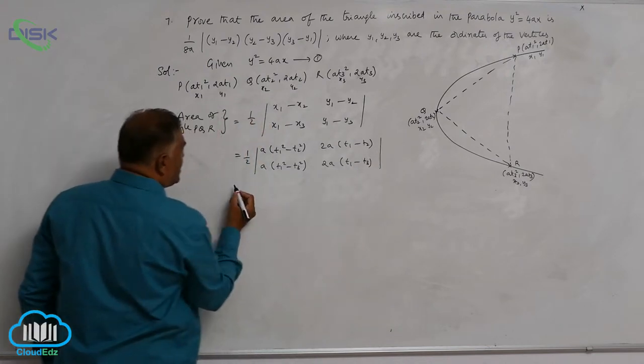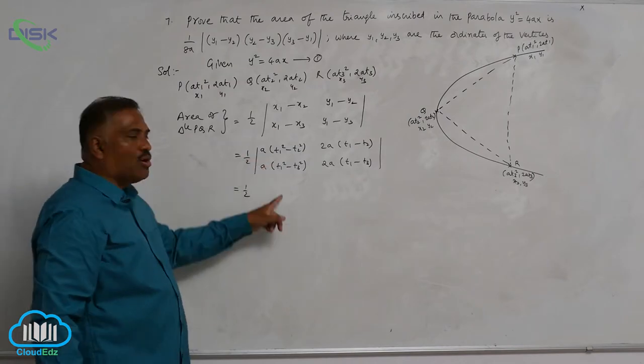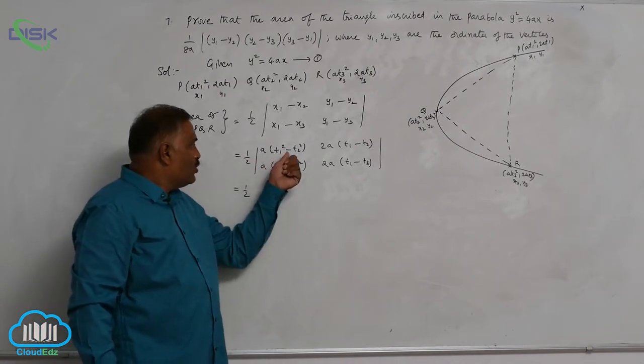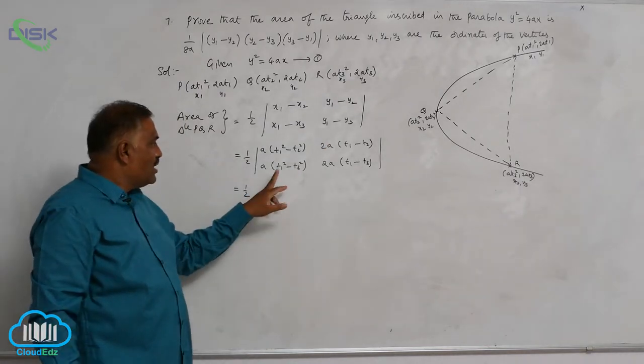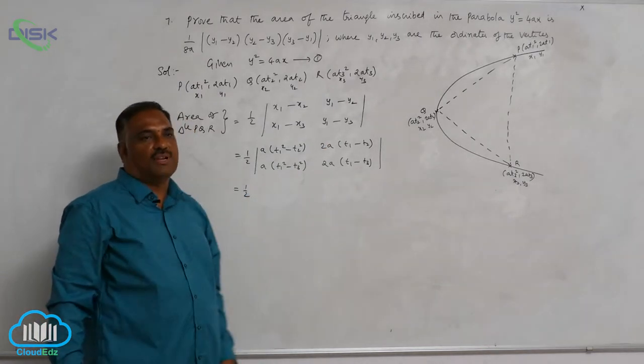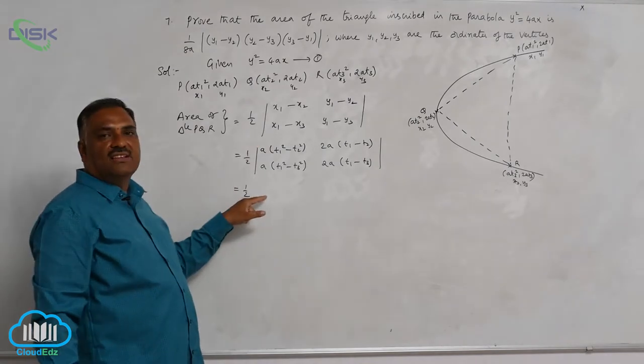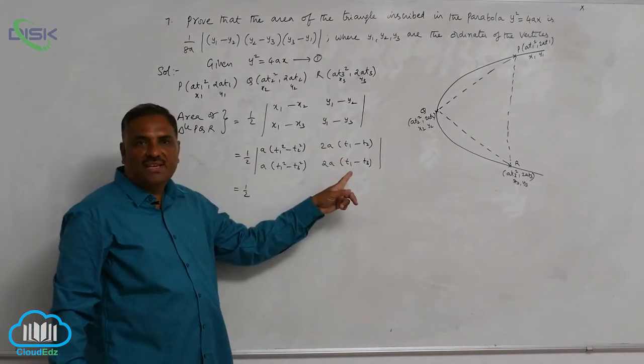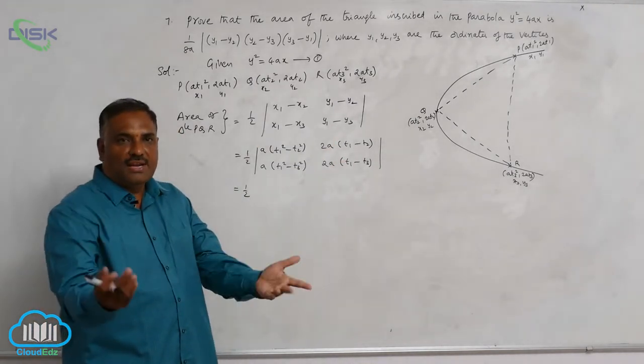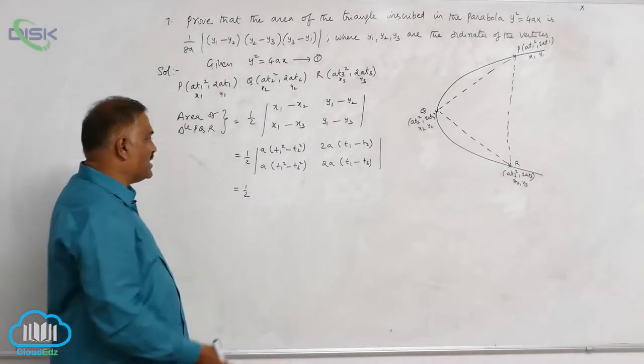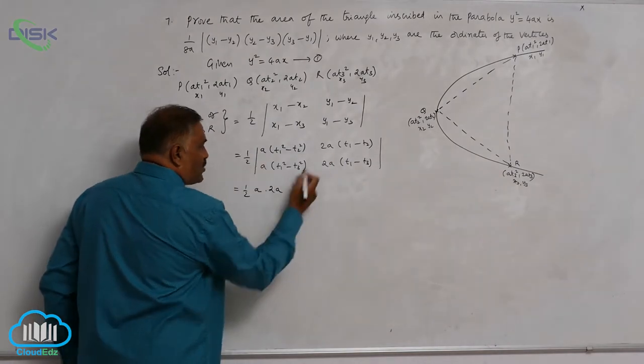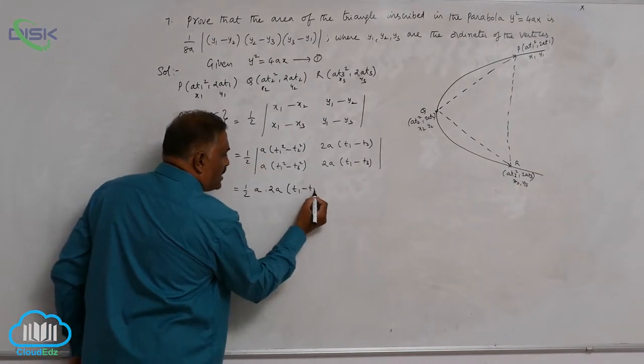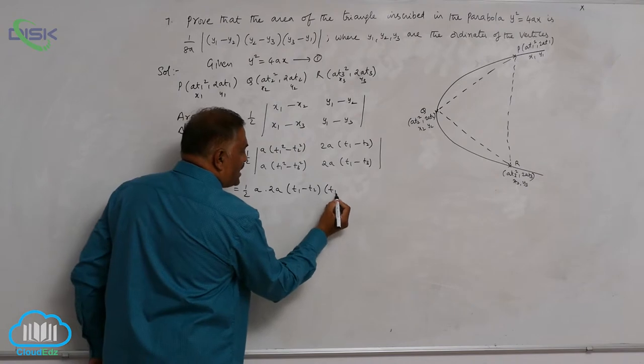Now you can check 1 by 2. In the first row, you can see t₁ minus t₂ is common. In the second row, t₁ minus t₃ is common. In first column, a is common. Second column, 2a is common. So, let us bring out all those common factors. From first column, a. Second column, 2a. First row, t₁ minus t₂. Second row, it is t₁ minus t₃.